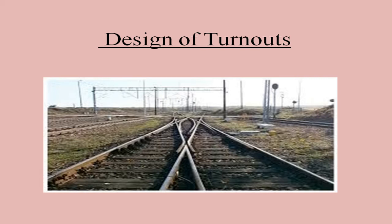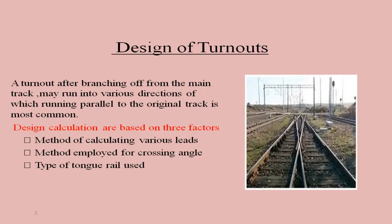In this video, we'll go through the topic of design of turnouts. A turnout, after branching off from the main track, may run into various directions, of which running parallel to the original track is most common. So we know that there are different types of turnout — sometimes the track may get entirely diverted from the existing track, and sometimes they may run parallel to the original track.